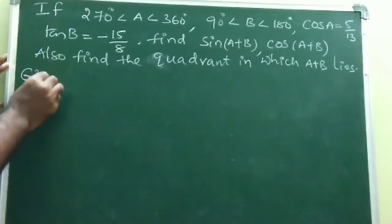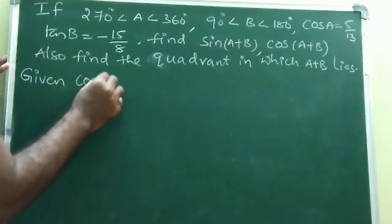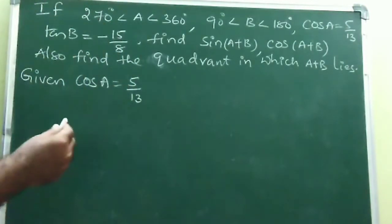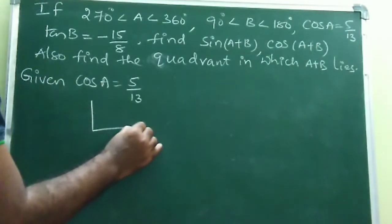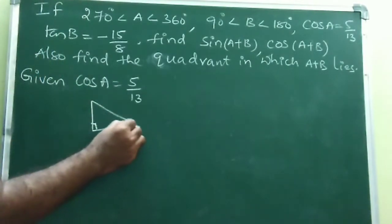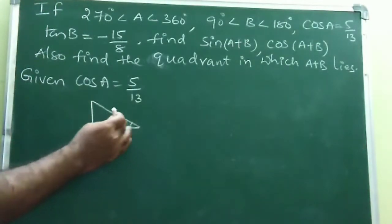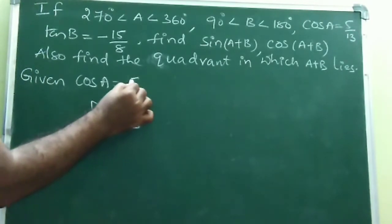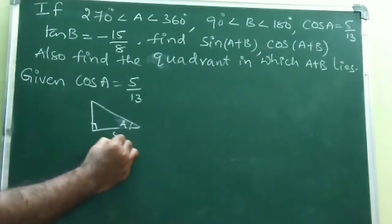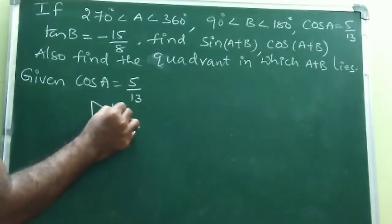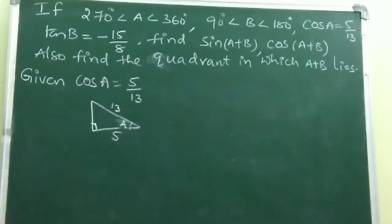Coming to the solution: cos A = 5/13. Using a right-angle triangle, cos is adjacent/hypotenuse, so adjacent = 5, hypotenuse = 13, and by Pythagoras the opposite side is 12. Since A belongs to the fourth quadrant (270° to 360°), cos is positive — that is why 5/13 is given. Sine A = opposite/hypotenuse = -12/13, negative because sine is negative in Q4.